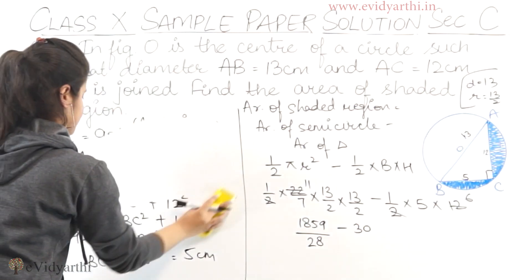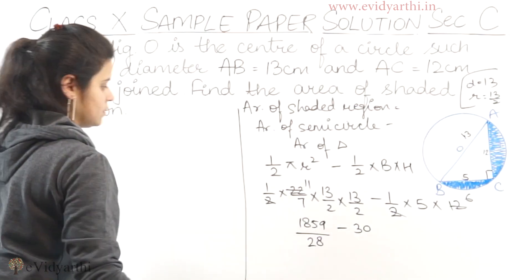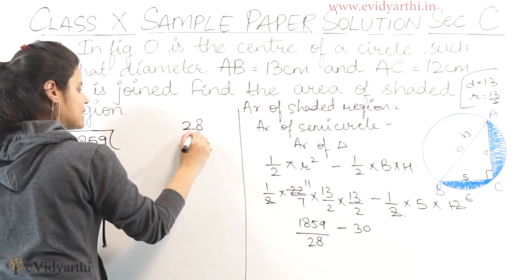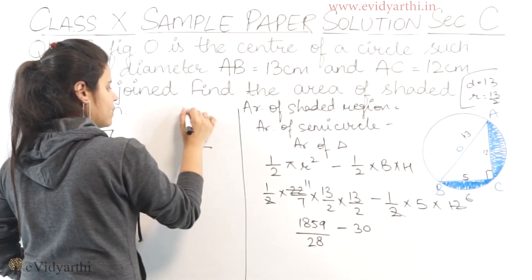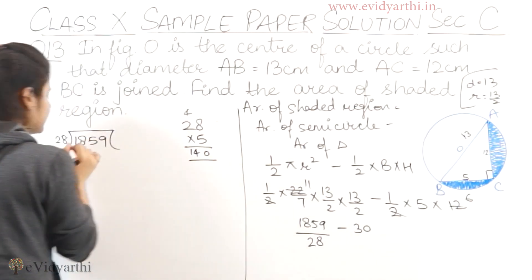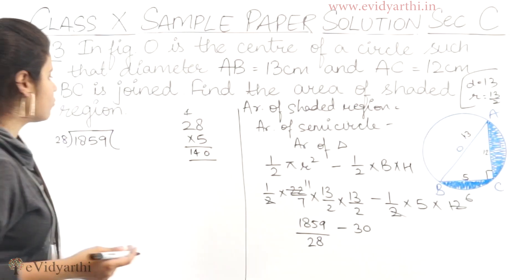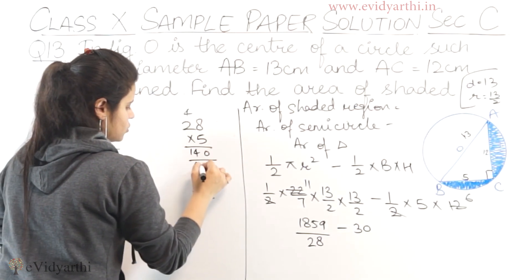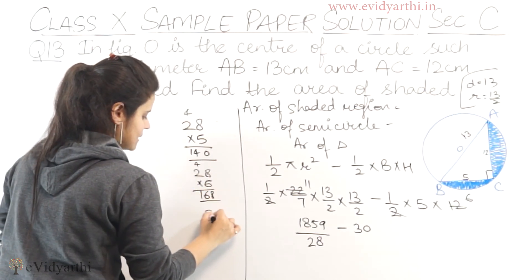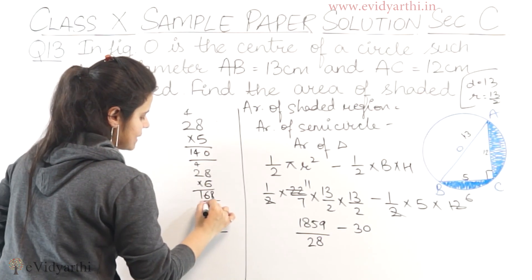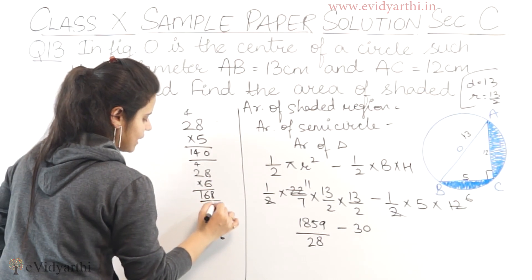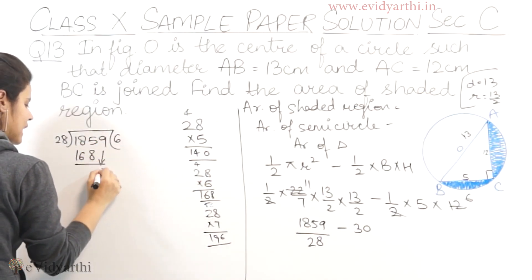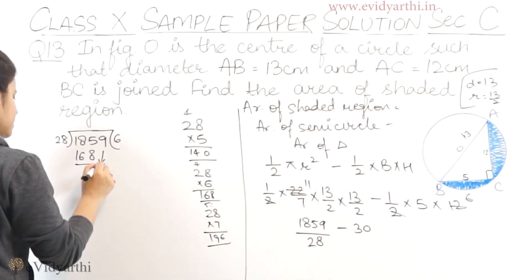Now moving ahead. We have to divide 1859 by 28. Trying 28 × 6 gives 168. Trying 28 × 7 gives 196, which is too large. So we use 6 and get 179 remaining.